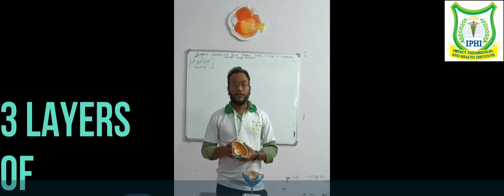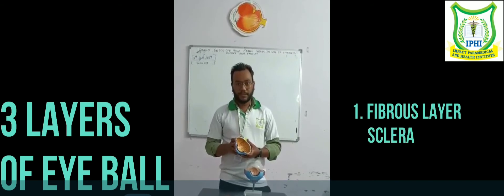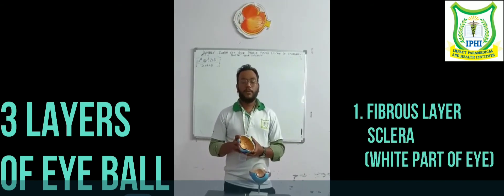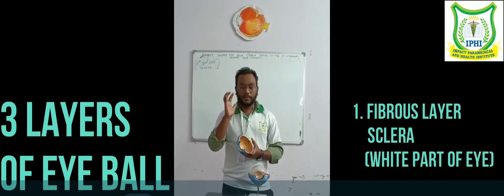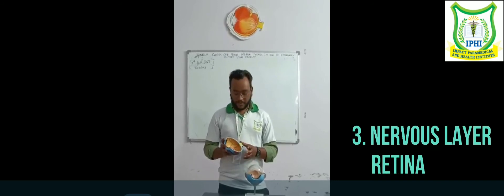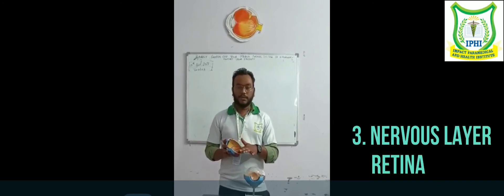Now we will talk about the layers. The first layer is the fibrous layer — the white part that you can see. The second layer is the vascular layer, which is the core layer. Then the inner layer is the retina, which is the innermost layer inside the eyeball.